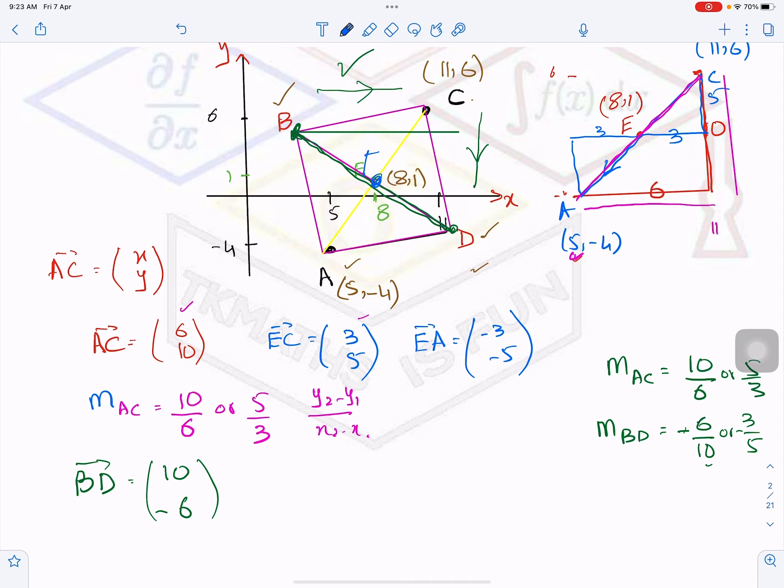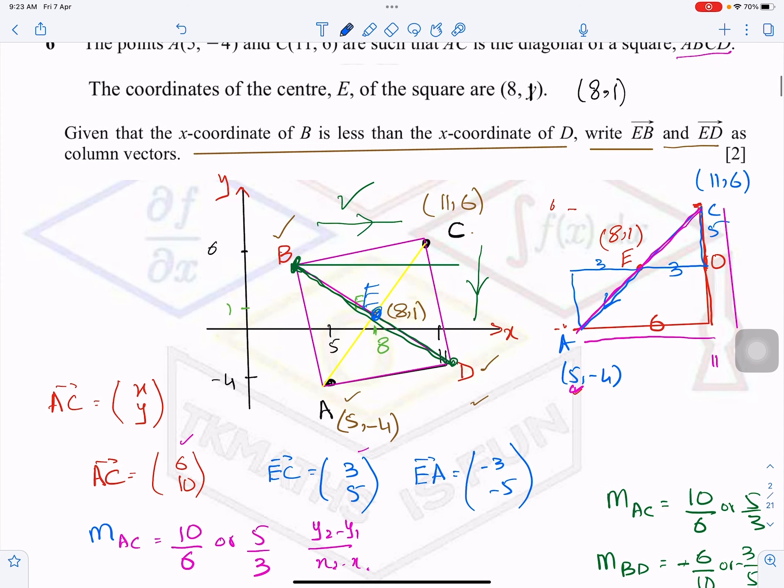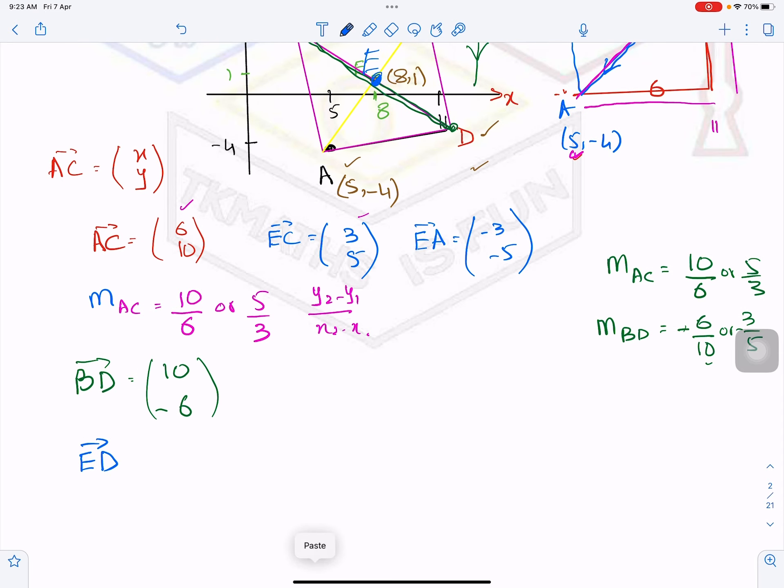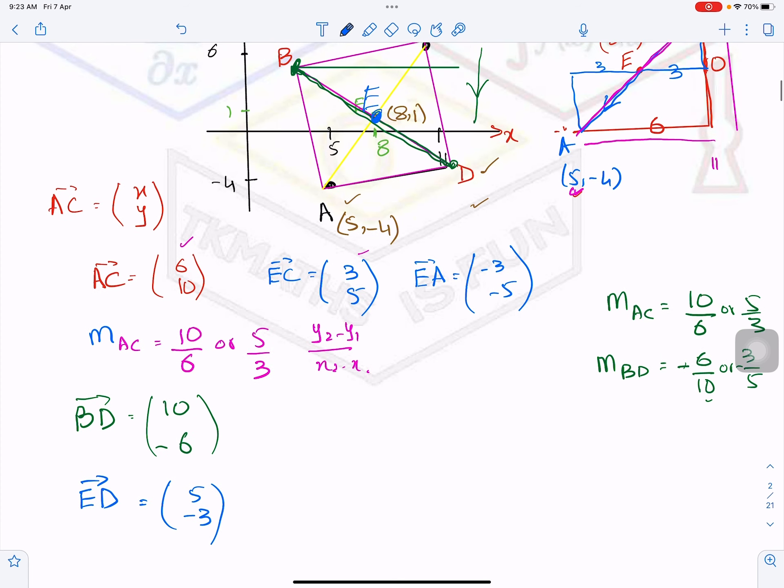Now after that, because the question is from E to D and E to B, it is very simple. If I have to write down vector ED, it means I am going from here, so it is halfway of this, so it will be (5, -3). Because BD was (10, -6), then your ED will be (5, -3). Because this one was 10 till here and this one was -6.